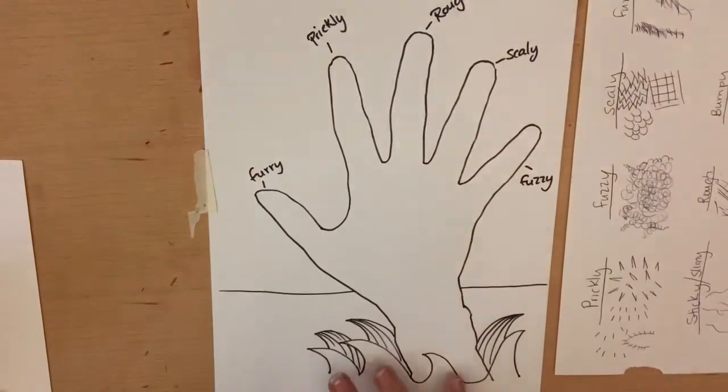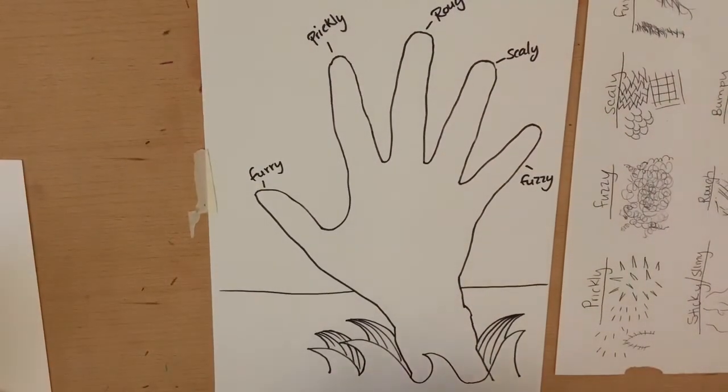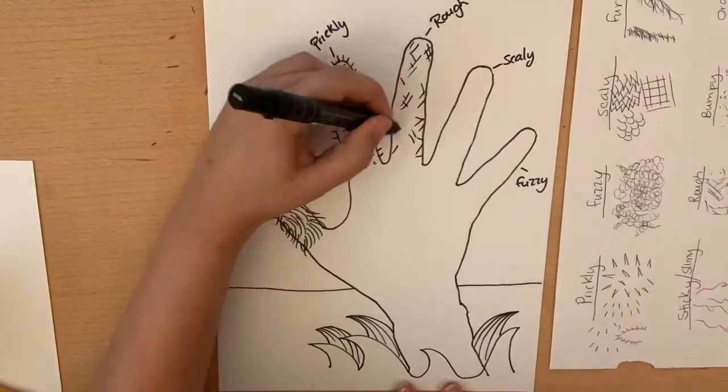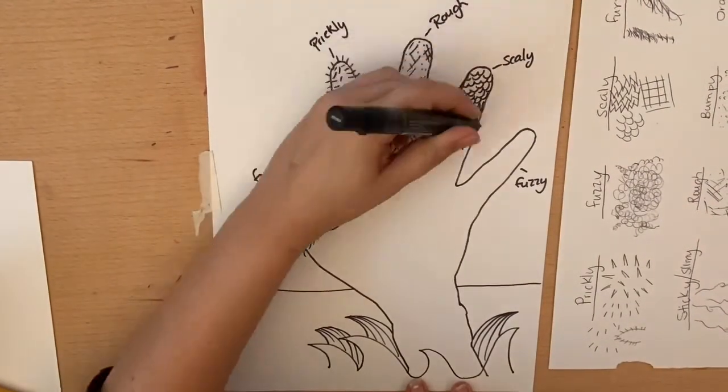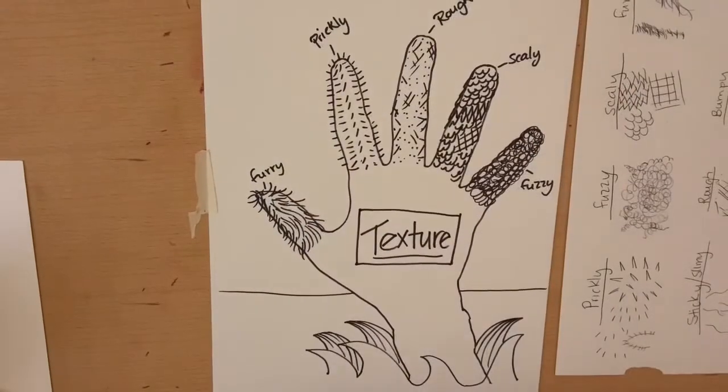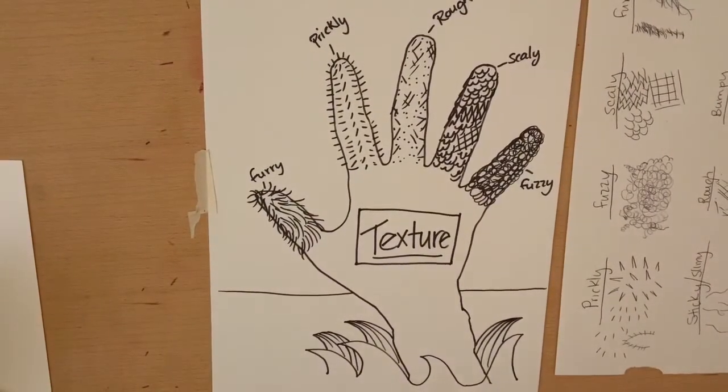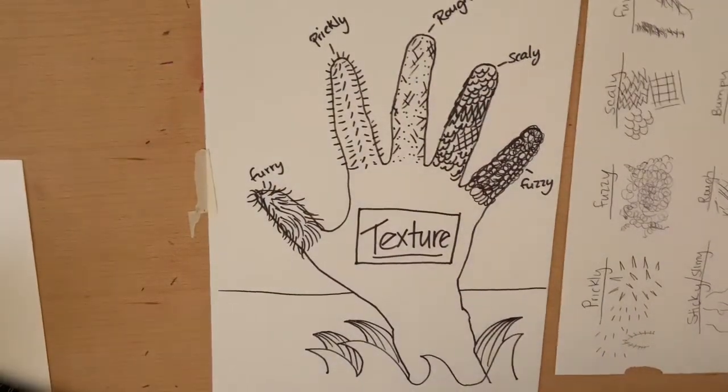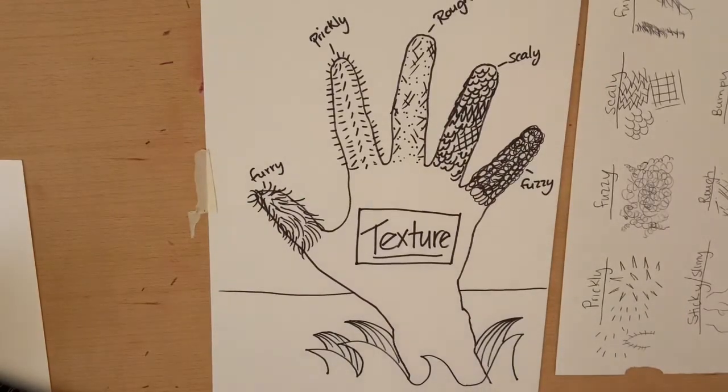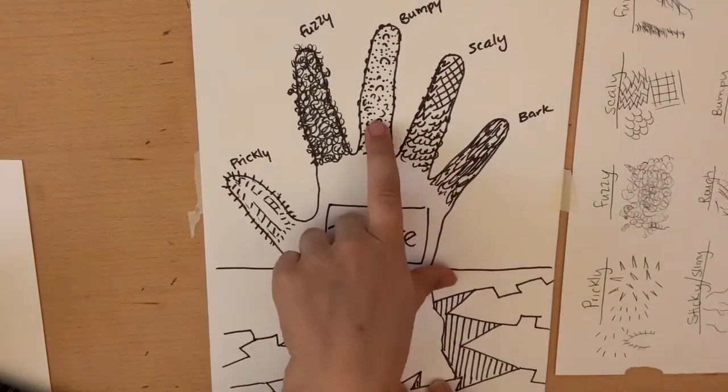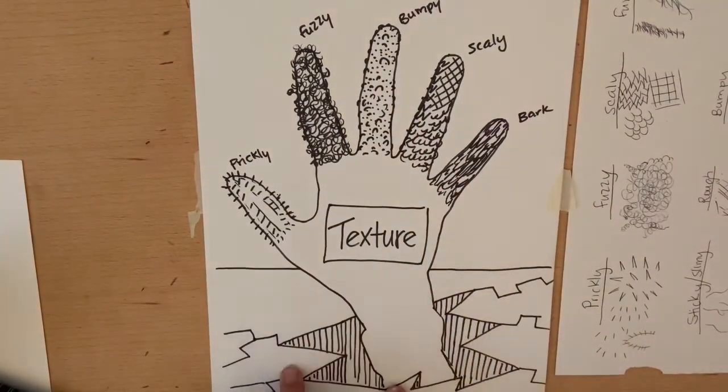And now I'm going to switch to time-lapse so we can speed this up. And there you have it. I've made my very own reference for implied texture. My texture hands. And as I said, you can choose different ones. This one. Okay. So I did bark. And I have bumpy. And then I had it coming out of the ground.